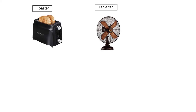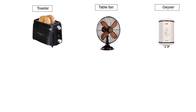The next electrical appliance is the table fan. A table fan can be placed on any surface and it is mostly round in shape. This is a geyser. It is an electrical device that is used to heat and store water for bathing, cleaning, and cooking.